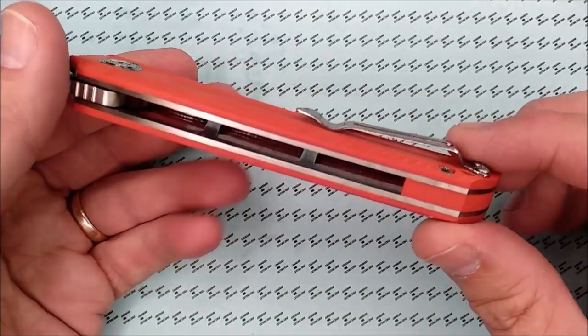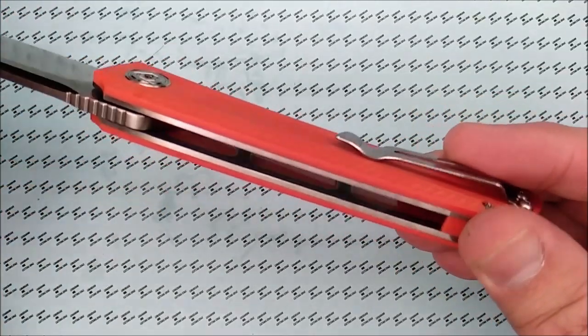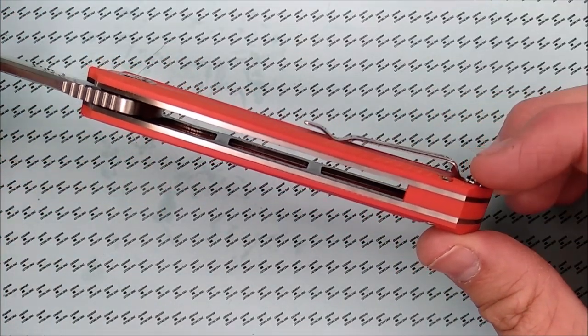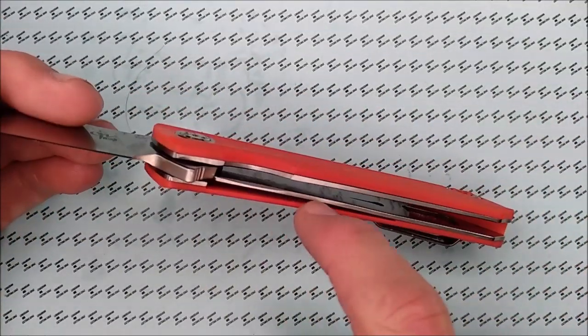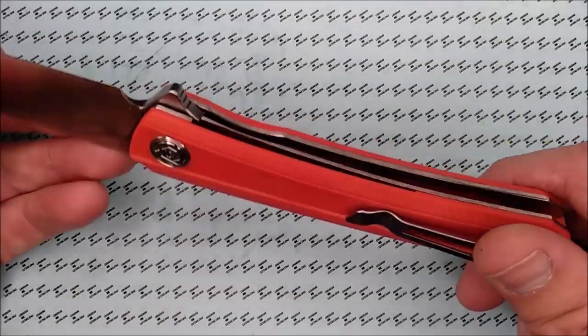We've got skeletonizing in here and you can see it right there. And there's just a little bit of skeletonizing on the working side that has the liner lock and the other side's got a lot of skeletonizing.